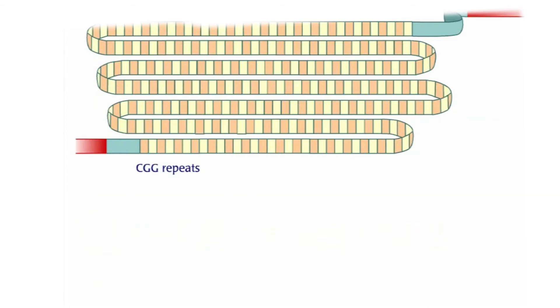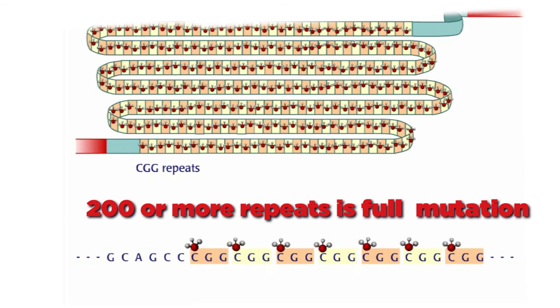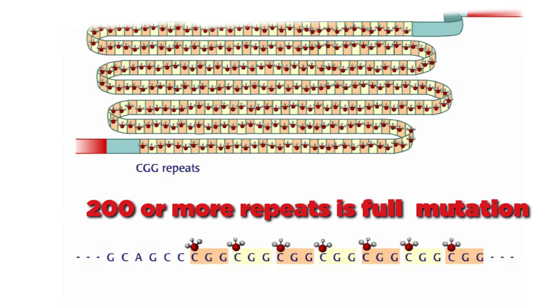People with Fragile X have 200 or more repeats. In this case, the gene is called a full mutation. When there are so many repeats in the gene, other molecules called methyl groups attach to the cytosine bases in the repeats.